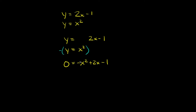I don't like the negative sign at the front in front of x squared, so I'm going to divide this whole side by negative 1, because that's going to flip the sign on everything. Whatever we do to one side, we do to the other. 0 divided by negative 1 is still 0. Negative x squared divided by negative 1 is positive x squared. Positive 2x divided by negative 1 is negative 2x. And negative 1 divided by negative 1 is positive 1. So now we have 0 equals x squared minus 2x plus 1.